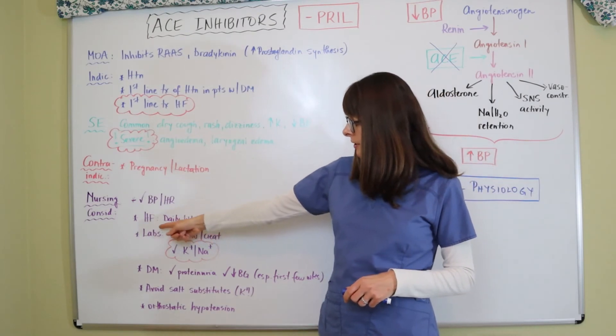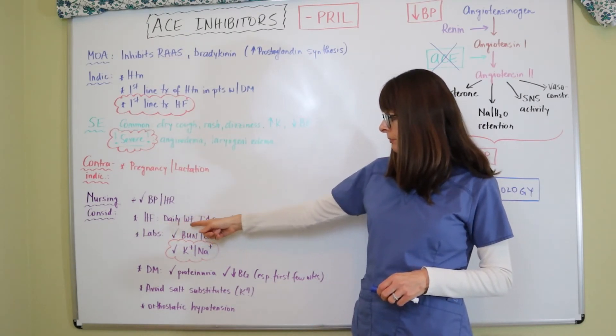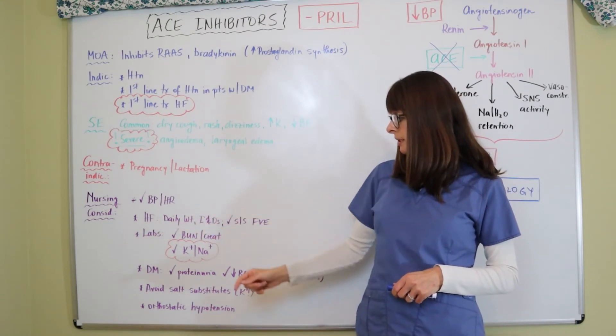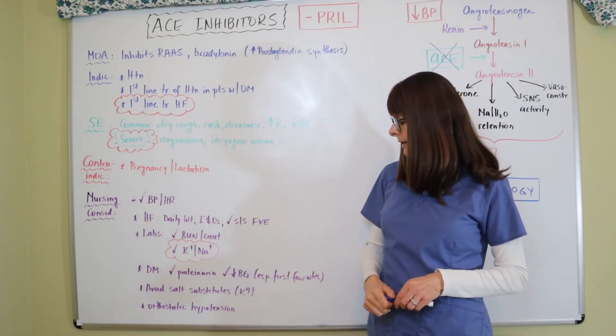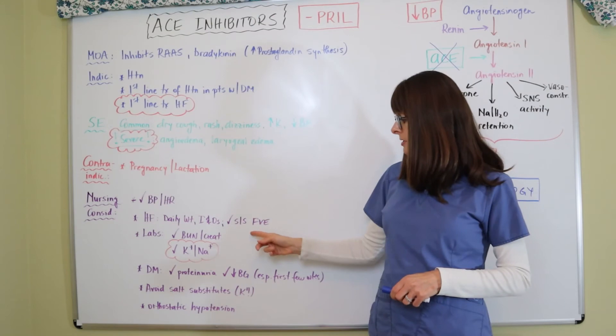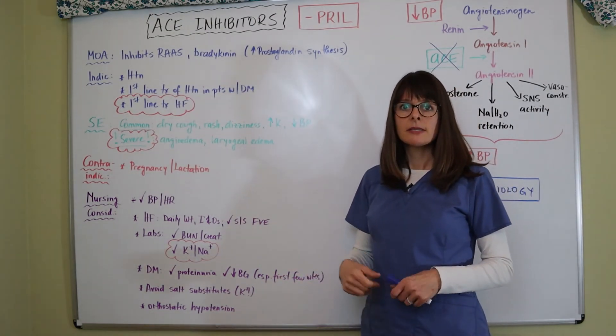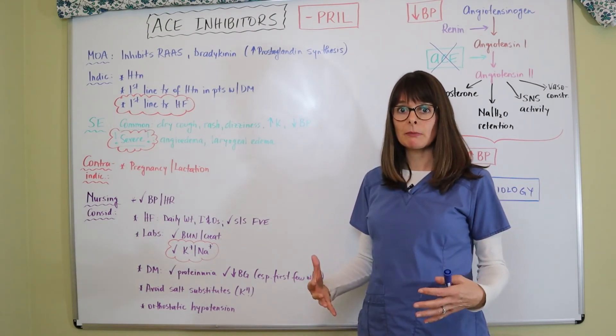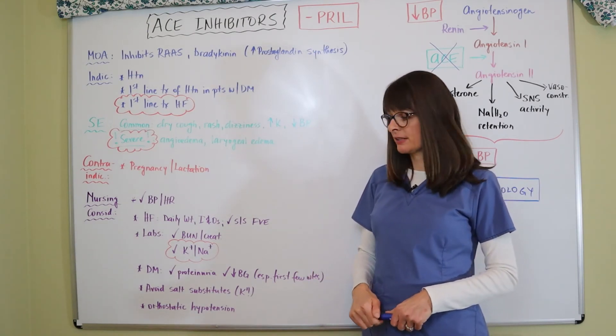If the patient has heart failure, we want to do the common things such as measure or monitor their daily weights as well as their intakes and output. And then monitor them for signs and symptoms of fluid volume excess, such as crackles in the lungs, peripheral edema, maybe some ascites if they get really severe.